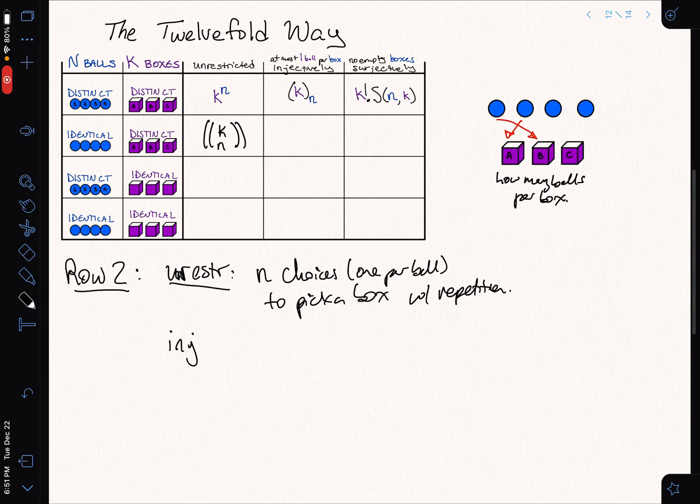What about, how does that change when we look at the injective case? Injective now says that once I pick a box, I can't pick it again. So really, it's just a question of which boxes have a ball and which don't.